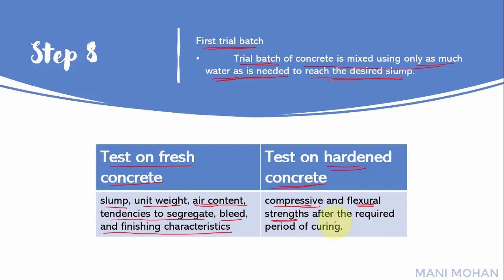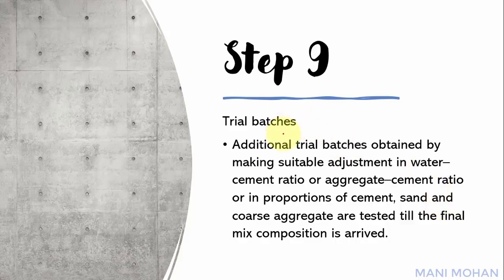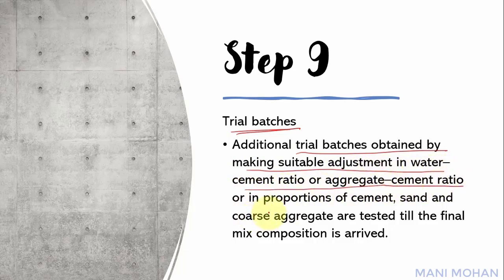Hardened concrete samples for compressive and flexural strength are cast as per standard procedures. After the required period of curing, the specimens are tested in wet conditions for compressive and flexural strength of the mix. Step 9: Trial batches — the trial batches, obtained by making suitable adjustments in water-cement ratio, aggregate-cement ratio, or proportions of cement, sand, and aggregate, are tested until the final mix composition is arrived at.